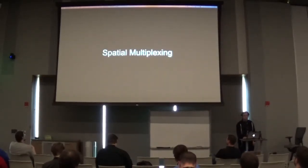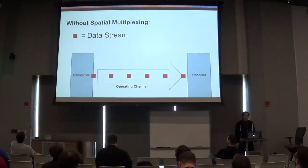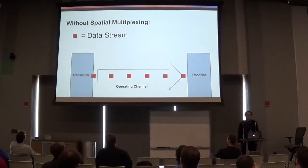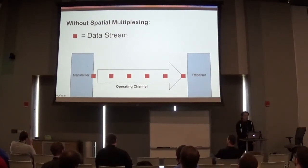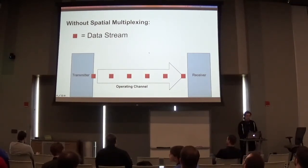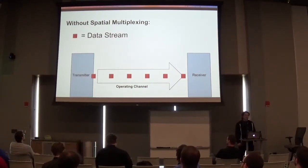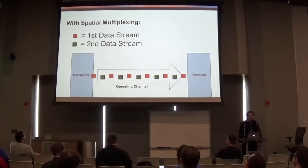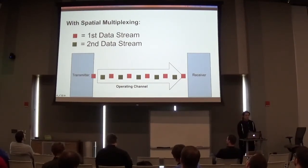There's also a really cool feature called spatial multiplexing. It's almost easier to understand by talking about what a network does without it. In this diagram, you have a transmitter on the left and a receiver on the right. The big arrow represents the operating channel. Those little red dots are your data stream — you can see only one data stream at a time per channel. That's the limitation without spatial multiplexing. Spatial multiplexing lets you send multiple data streams per channel, greatly improving efficiency.